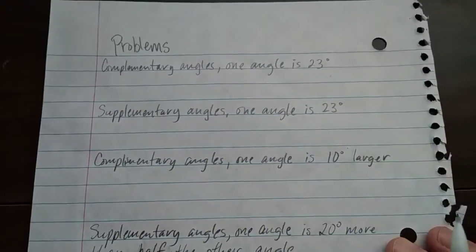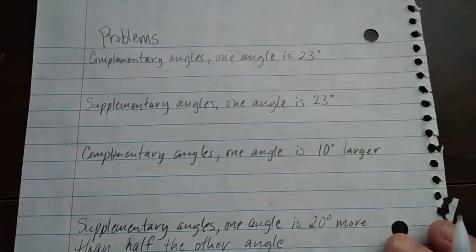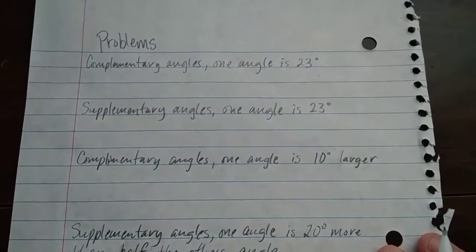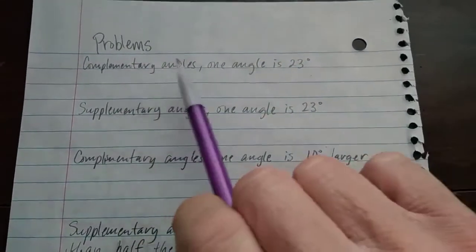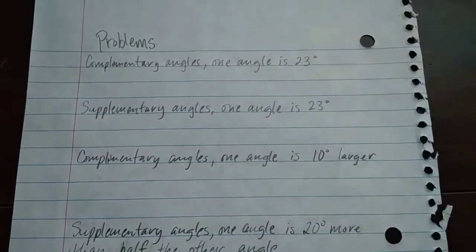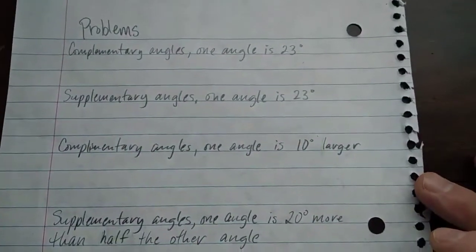So now we're going to do some practice problems involving complementary and supplementary angles. So the first one says that there are complementary angles, one angle is 23 degrees, so we're finding the measure of the other angle.